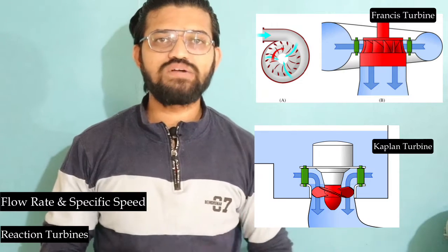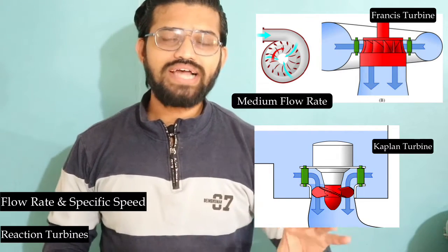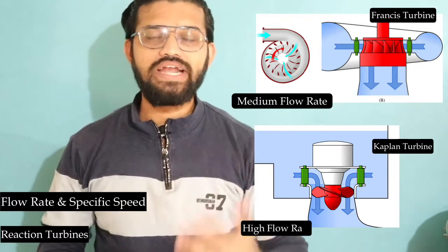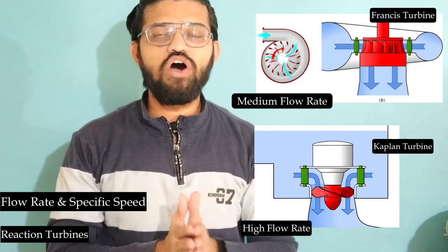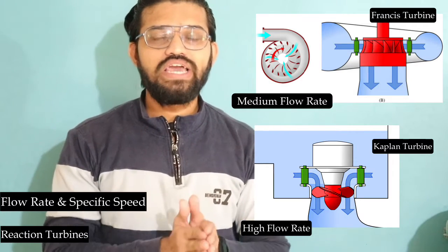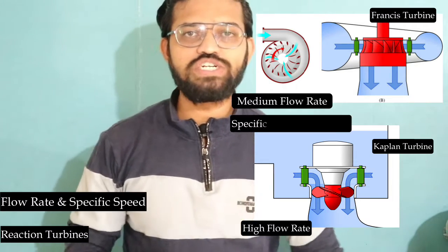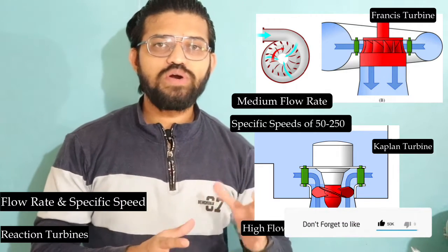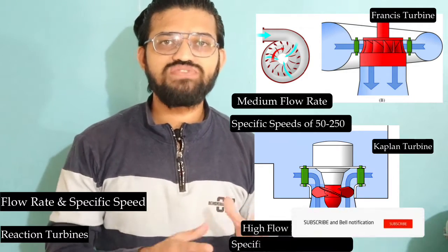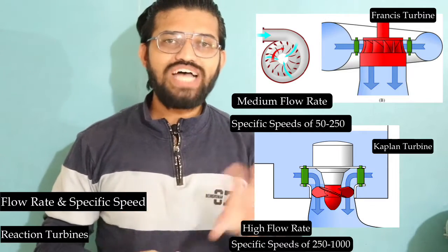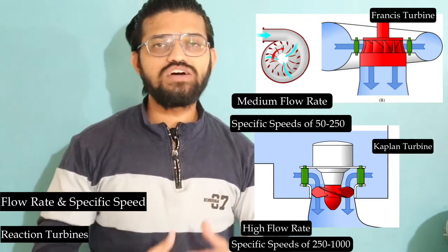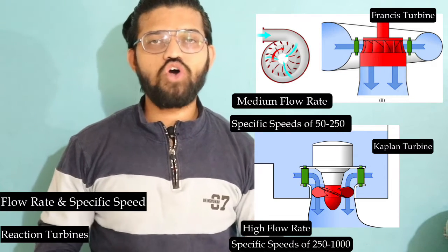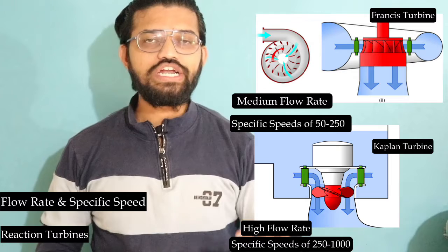Regarding flow rate, the Francis turbine has a medium flow rate, whereas the Kaplan turbine has a higher flow rate. This is why the specific speed of the Francis turbine is on the medium side — around 50 to 250 — while the Kaplan turbine has a higher specific speed of around 250 to 1000.